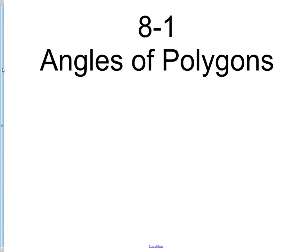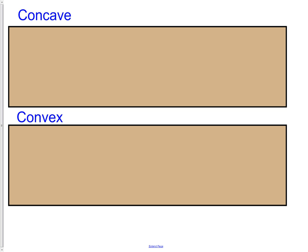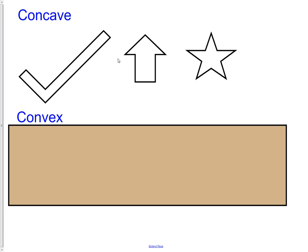We're beginning chapter 8, which is the study of quadrilaterals. In section 8-1 we're going to talk about polygons and general properties regarding their angles. The first thing we need to recall is what it means to be concave, which means dented in. You'll see with the check mark, the arrow, and the star how a side of the polygon is dented in. Remember, polygons are made up of segments — never curves.